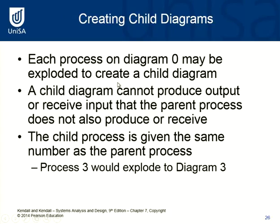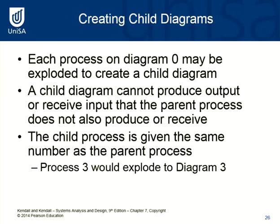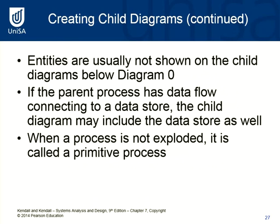Each process on a diagram zero may be exploded to create a child diagram, and the numbering convention is important. A child diagram cannot produce output or receive input that the parent process does not also produce or receive — you can't create new things unless they are shown at the parent level. The child process is given the same number as the parent: process three would explode to diagram three, with sub-processes numbered 3.1, 3.2, 3.3, 3.4.